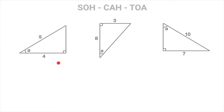Looking at the first triangle, the first thing we should always do is summarize the information we're given relative to the interior angle that we're after. Looking at this triangle, and in particular the interior angle A, we can see that we're given its adjacent side length — that's 4, which I mark with the letter A — as well as this right-angled triangle's hypotenuse, which is 5, and I mark that with the letter H.